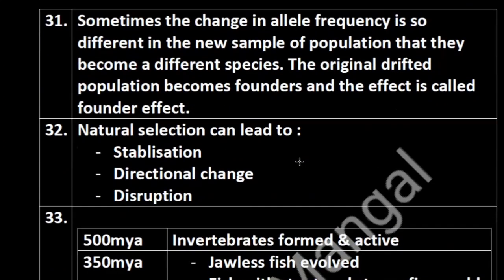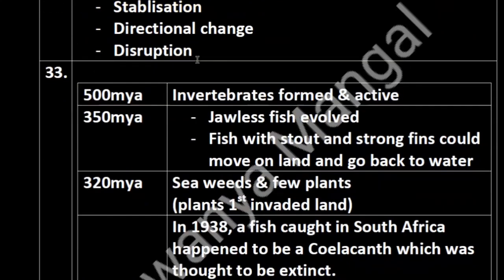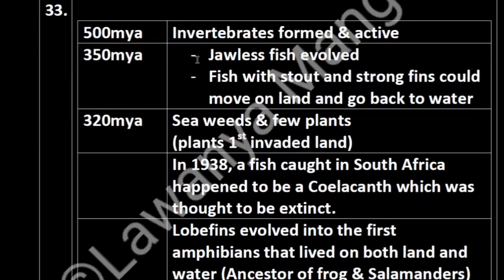Sometimes the change in allele frequencies is so different in a new sample of a population that they become a different species. The original drifted population becomes the founder and the effect is called the Founder Effect — where such a large change occurs that one species completely converts into another new species through speciation.